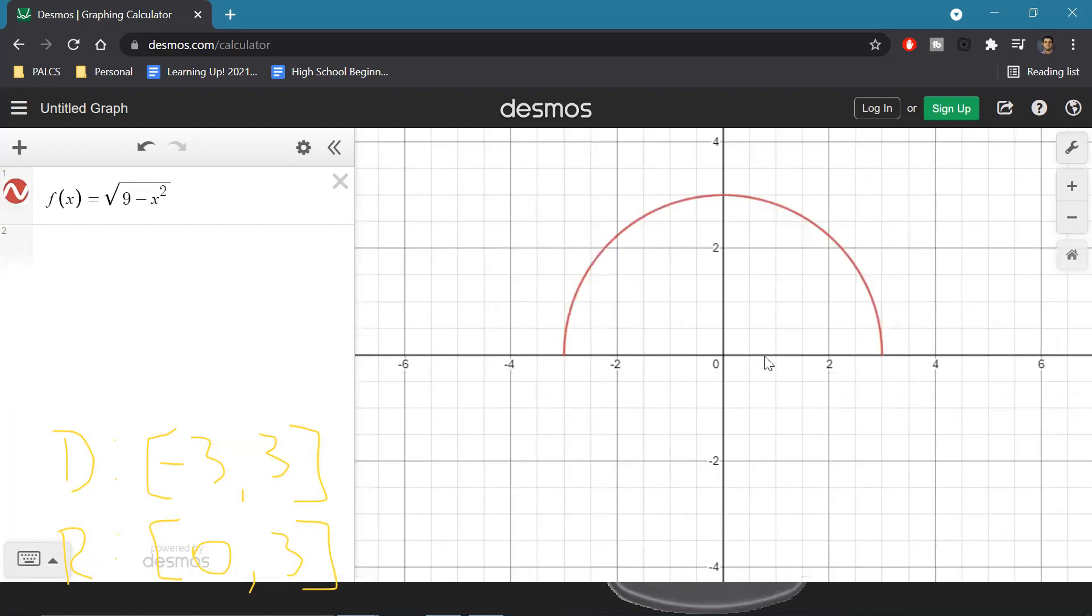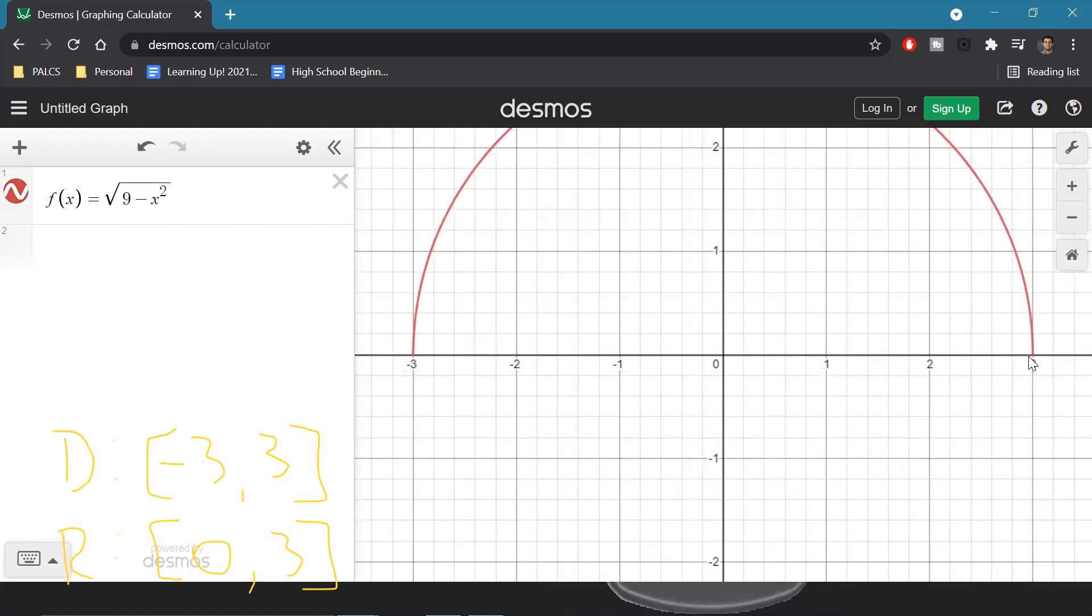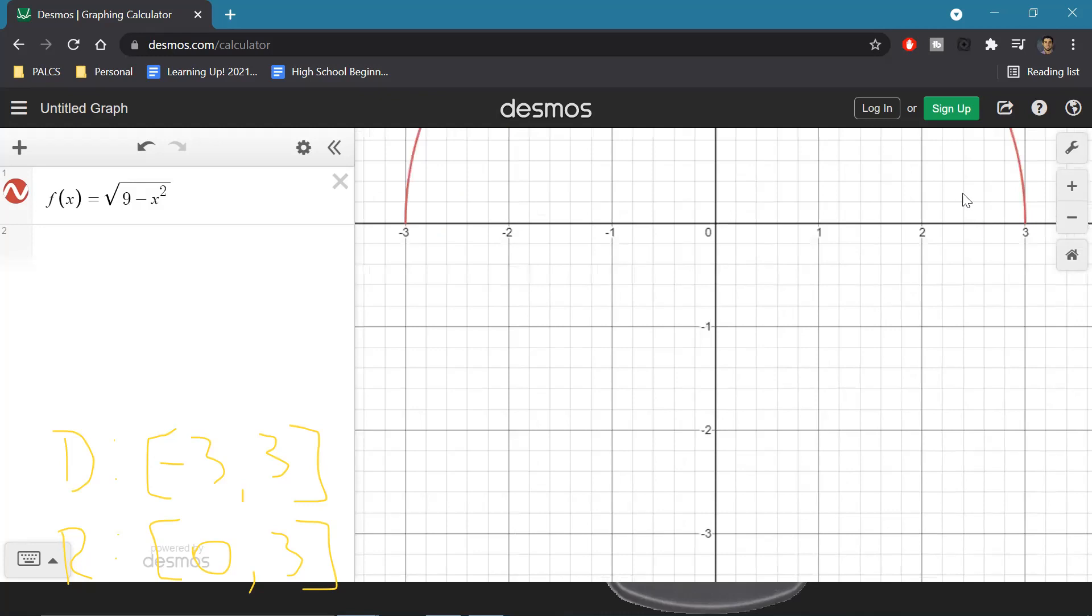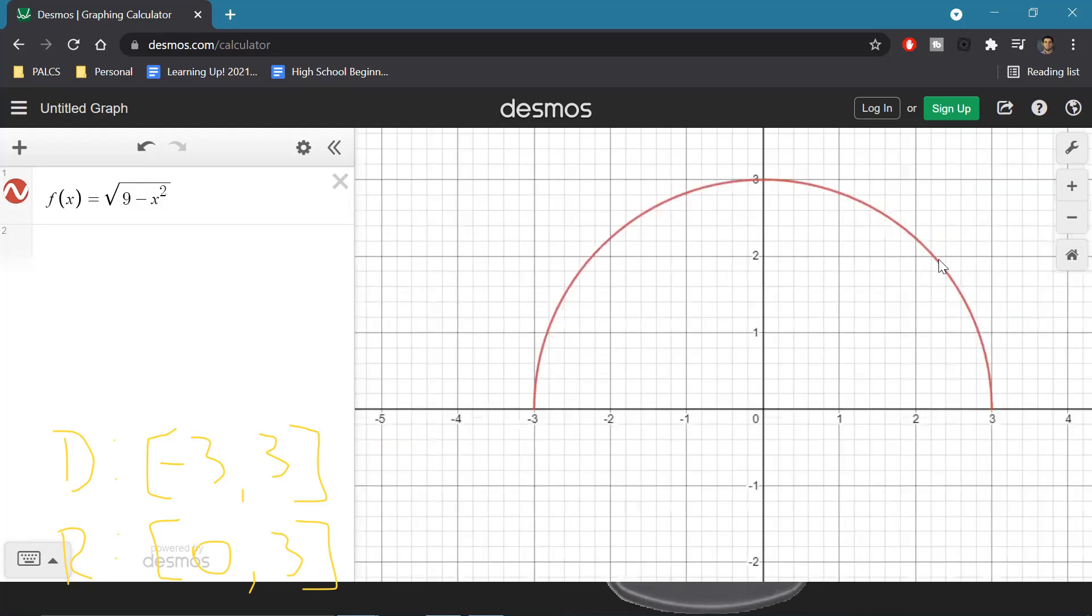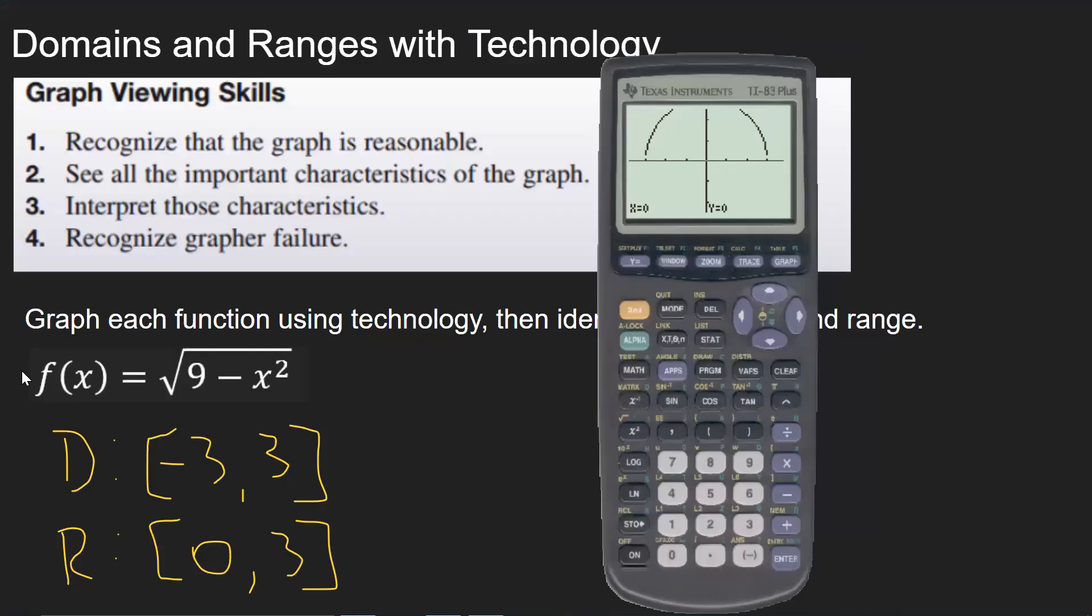you can use this for squaring and this for general exponents. Now, here you get a more accurate picture of the graph and you can really see what the graph looks like and even click on it and drag your point around. So it's very nice. All right. So the domain, negative three to three, the range zero to three.